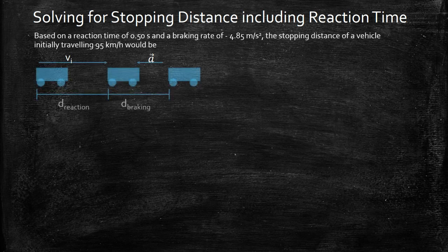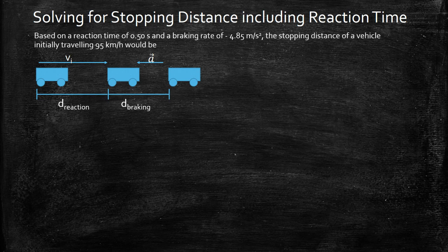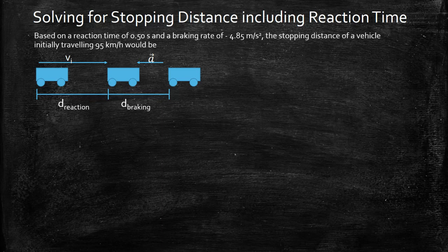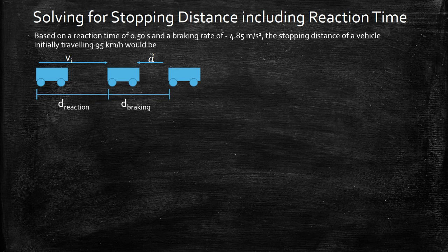So our first step is to draw some of what's going on. We have a car moving with an initial velocity. While it's moving with that velocity it's going to travel a certain distance. That's the distance it's going to travel during the reaction time, so before we hit the brakes.